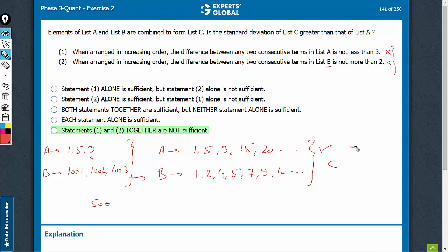In this case, the answer would be no, standard deviation of list C is not more than the standard deviation for list A, but in this case, we will get yes as an answer. No and yes, both are possible, and therefore, even combining did not help. And the answer is option E.